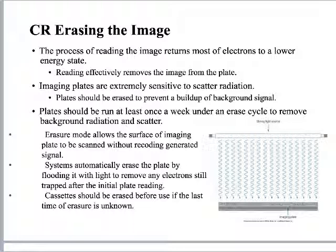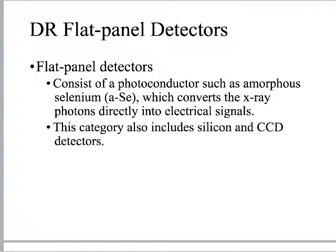The final step is erasing the PSP plate. We expose it to very strong fluorescent white light — you can actually see the fluorescent light being emitted from the CR reader as it finishes. This completely erases the PSP plate and allows it to be x-rayed again. Given CR's sensitivity to natural background radiation, if you don't know when a CR cassette was last used, I recommend erasing it before a portable run.